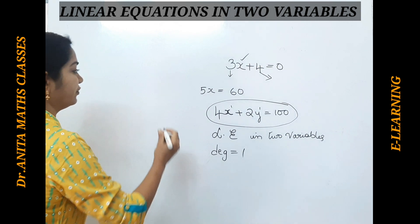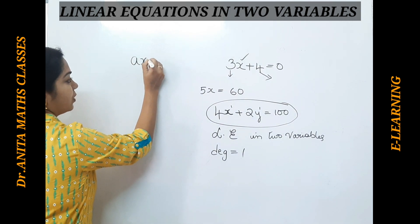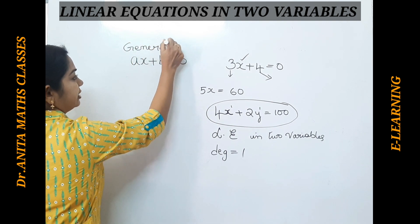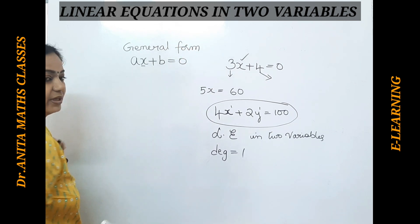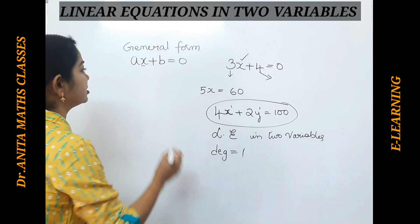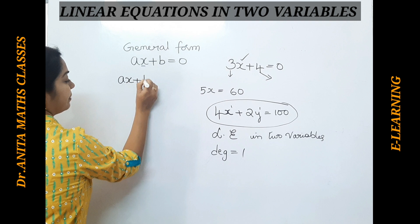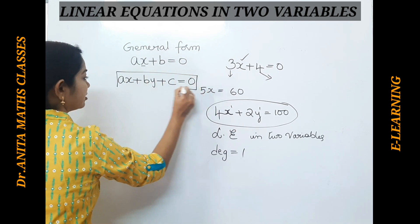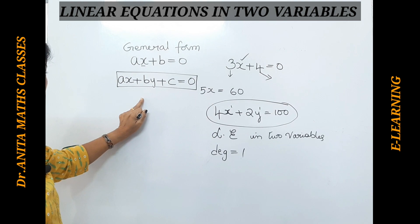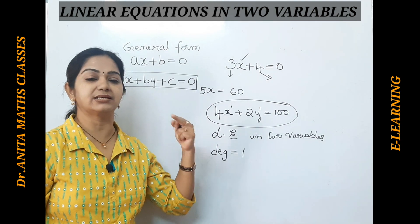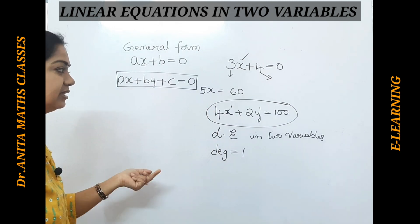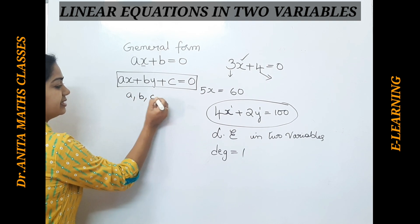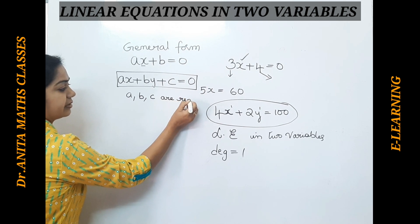The general form of a linear equation in one variable has only x as the variable. Similarly, the general form of a linear equation in two variables is written as ax + by + c = 0. This is the general form of linear equations in two variables, where the variables are x and y. You can also use p and q, or s and t — any variables. Here a, b, and c are real numbers.